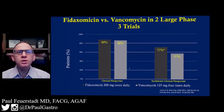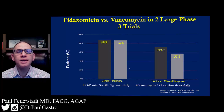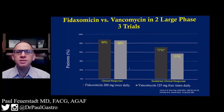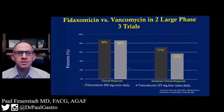There were two large prospective randomized controlled trials conducted in the United States and Canada in one, and globally in the other. Within those studies, patients diagnosed with C. difficile were randomized to either receive Fidaxamycin, or Dificid, 200 mg, twice daily for 10 days,